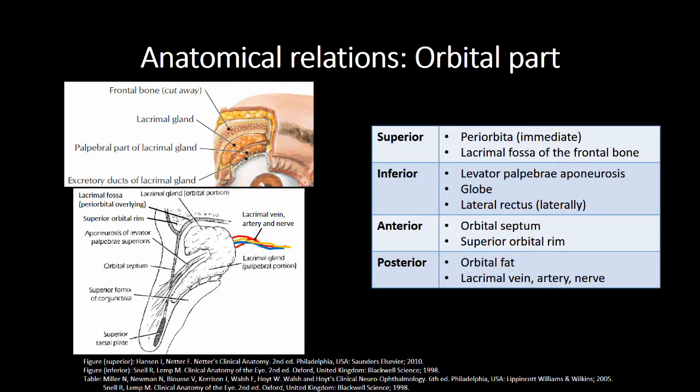An understanding of the gland's anatomical relations is essential for the ophthalmologist. For the orbital part, superiorly we have the periorbita immediately and the lacrimal fossa behind it. Inferiorly we have the levator aponeurosis, the globe, and lateral-inferiorly, the lateral rectus.